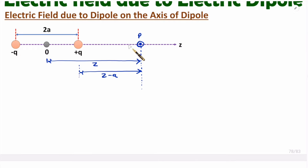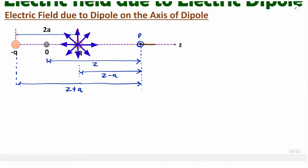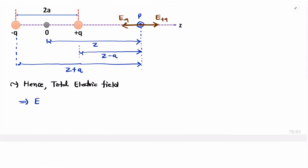With respect to the minus Q charge, the distance to the observation point is total distance Z plus this spacing A, so that distance is Z plus A. Now we have the spacing from both charges to the observation point. Due to plus Q charge, the electric field will emerge and go in the positive direction at the observation point — that is E plus Q. Due to minus Q charge, the electric field is directed toward the charge, so at the observation point that is E minus Q. The total electric field is E plus Q plus E minus Q.